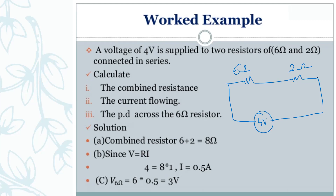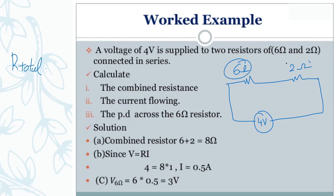First step: look at the circuit — it is a series circuit, so R total equals six plus two, which is eight ohms. This is how you find the combined resistance: add six plus two to get eight ohms.